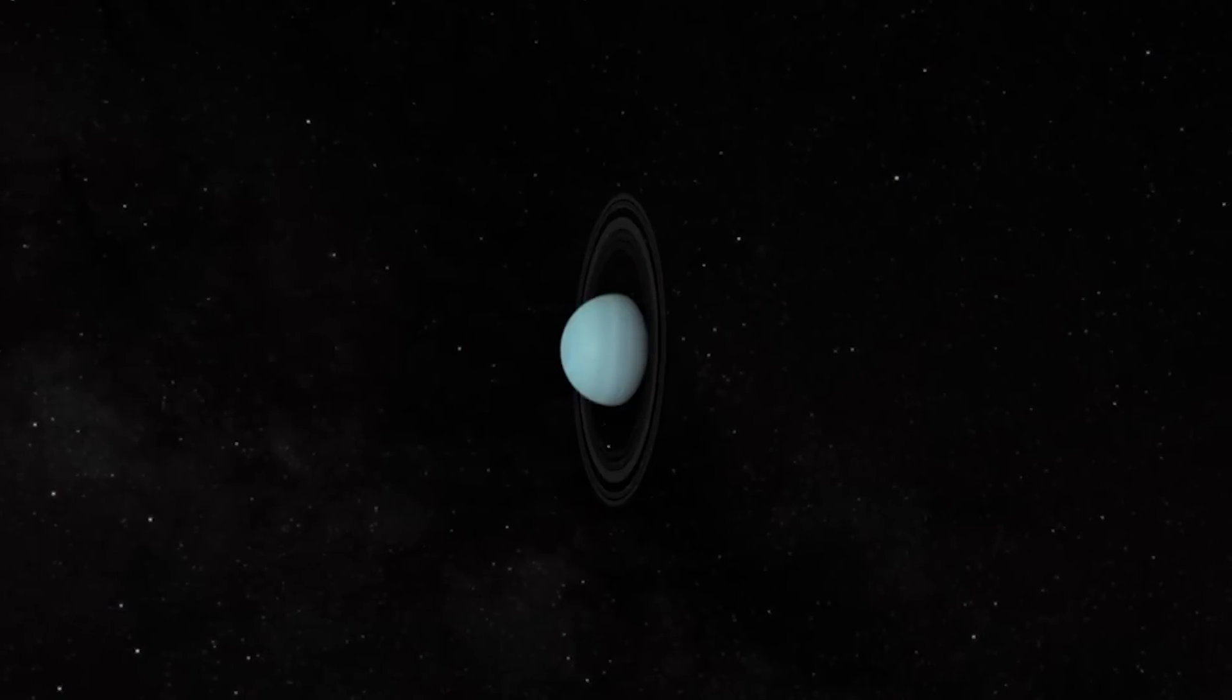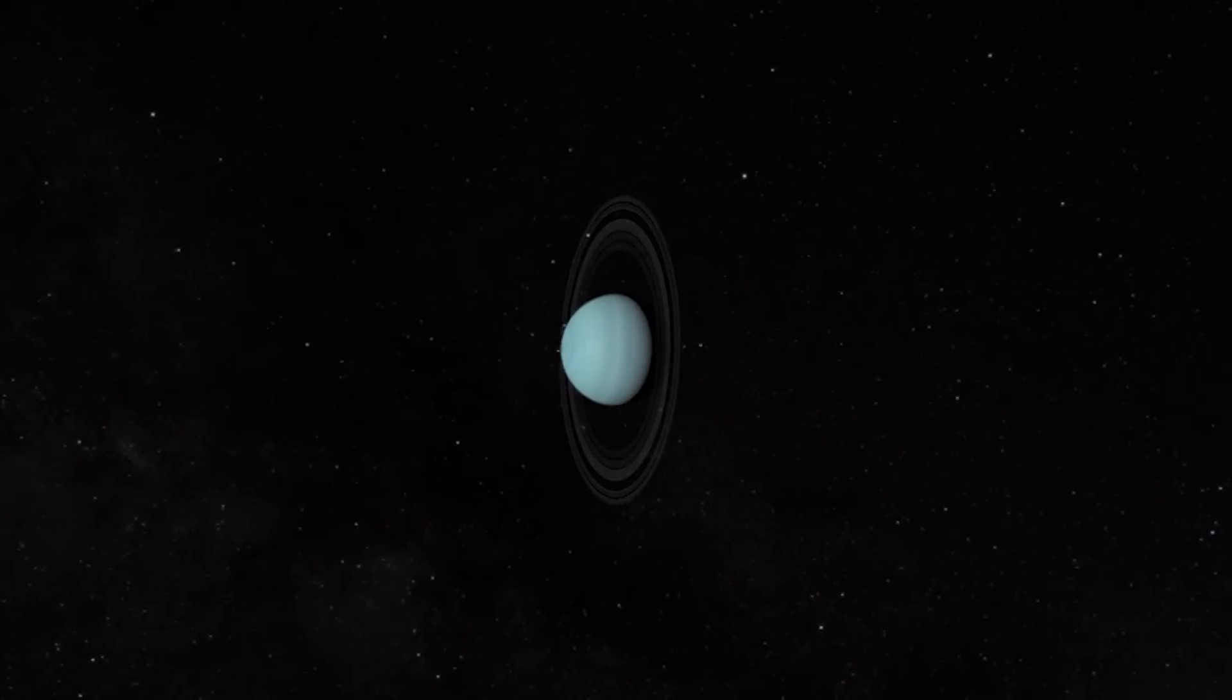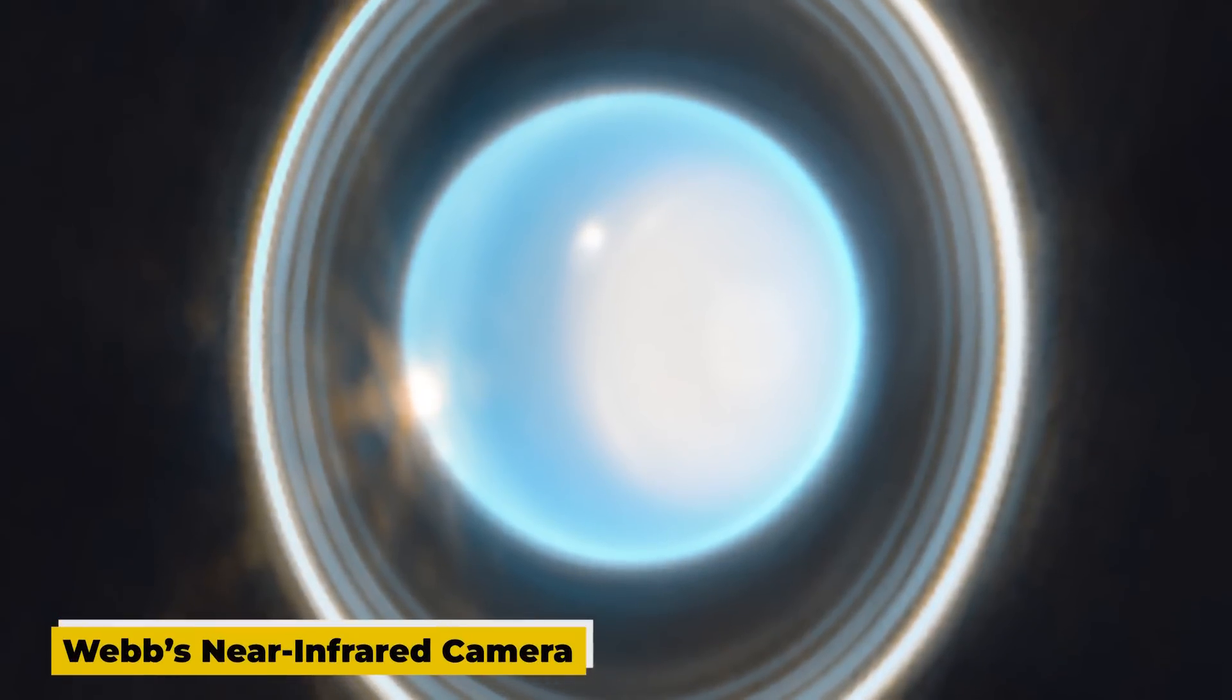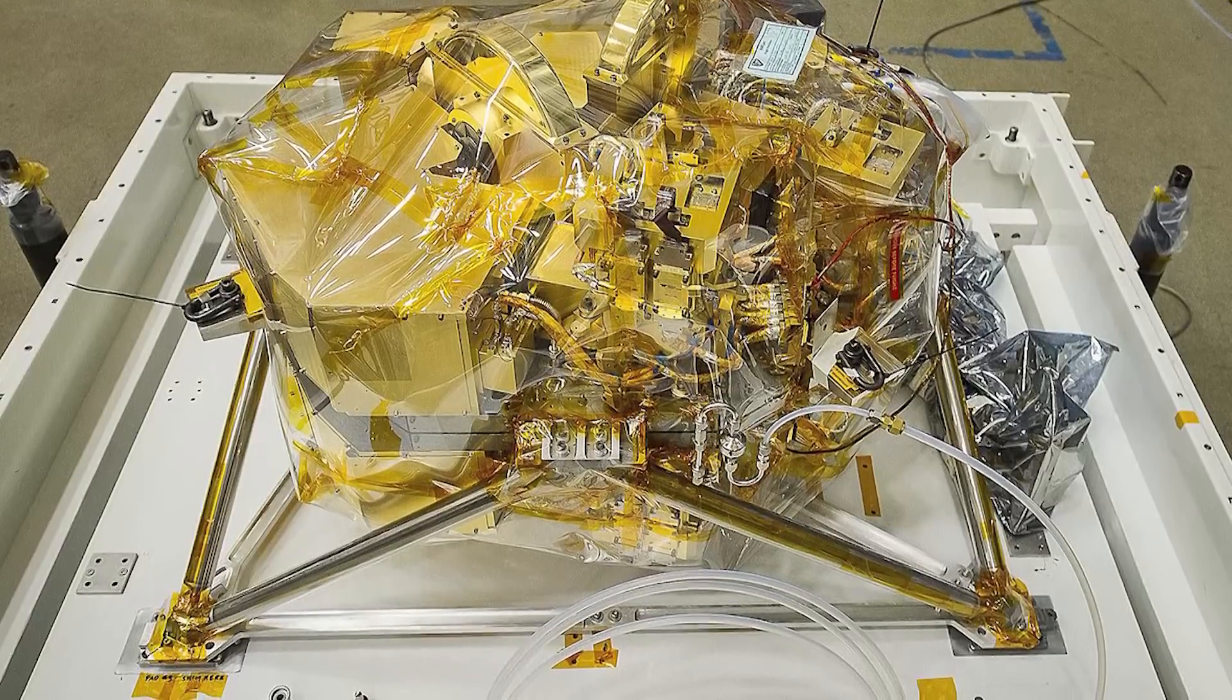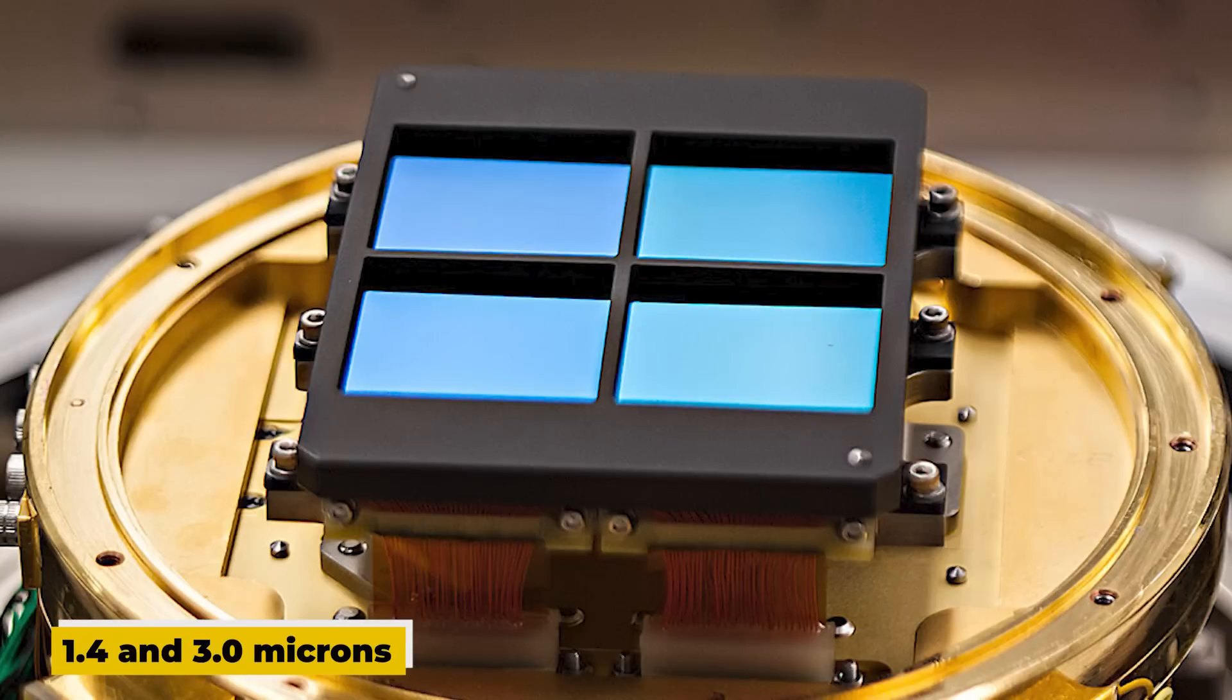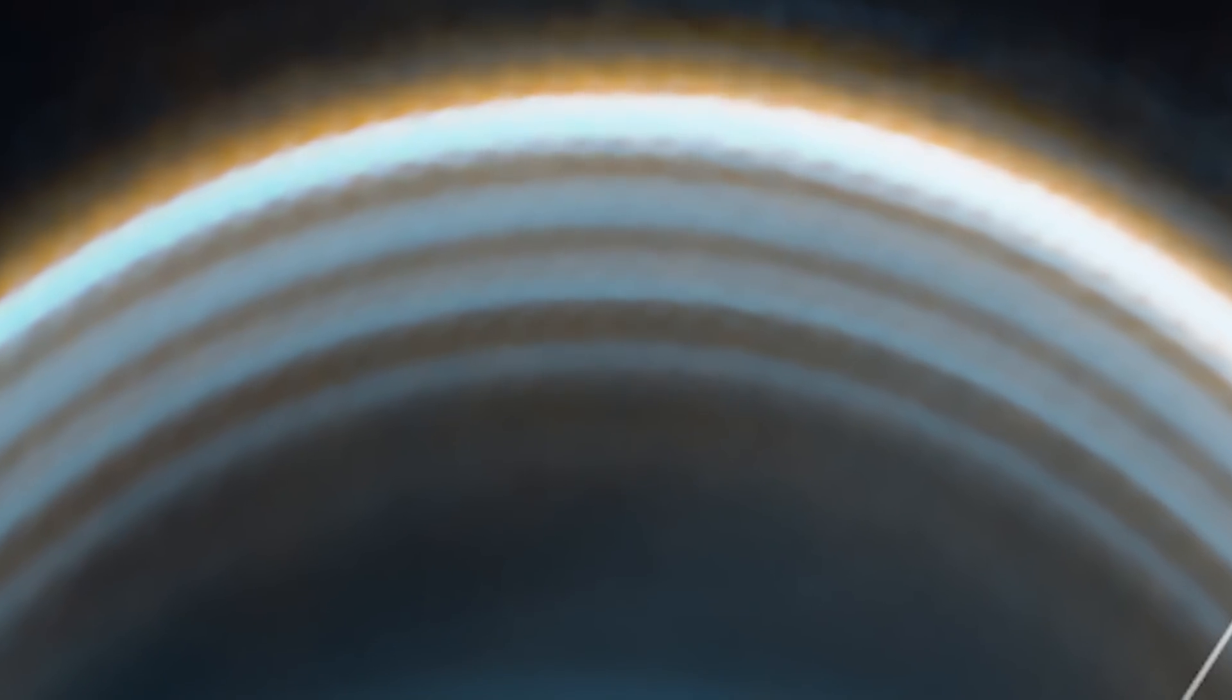This infrared image from Webb's near-infrared camera combines data from two filters at 1.4 and 3.0 microns, which are shown here in blue and orange respectively.